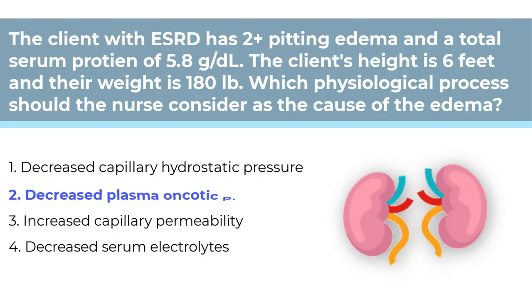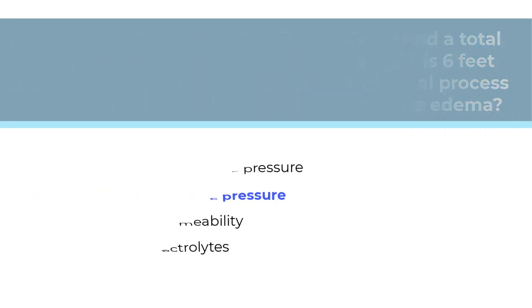The correct answer is Number 2. The total serum protein is 5.8, which is low — normal serum protein is usually about 6 to 8. End-stage renal disease clients often have low plasma protein from malnutrition and protein restrictions. These reduce plasma oncotic pressure and result in fluid remaining in the interstitial space because the pressure is not great enough to pull the fluid into the capillaries. The other answers are incorrect: Number 1, increased (not decreased) capillary hydrostatic pressure results in edema; Number 3 can also cause edema but low serum protein suggests decreased oncotic pressure is most likely; Number 4, an increase (not decrease) in serum electrolytes is the relevant concern.